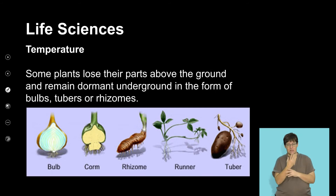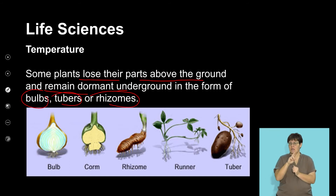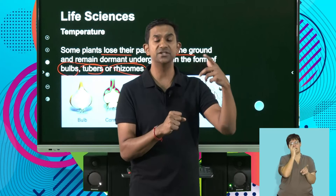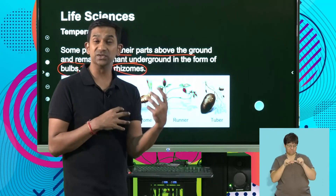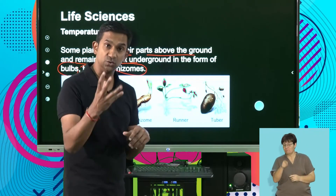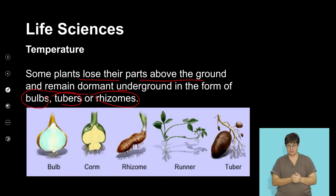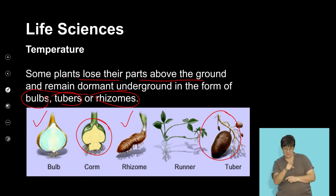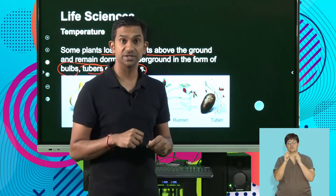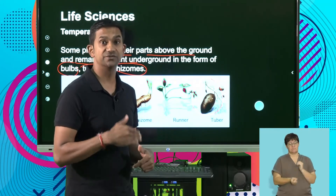Some plants lose their parts above the ground and remain dormant underground in the form of bulbs, tubers, and rhizomes. This is a mechanism where they store energy in these structures and survive the cold, unfavorable seasons, then germinate during the next season. Examples include bulbs as storage structures, corms such as garlic plants, rhizomes such as gingers, runners, and tubers such as those seen in potatoes and yams — all structures that allow plants to survive changes in temperature and reproduce when temperatures are conducive during spring seasons.